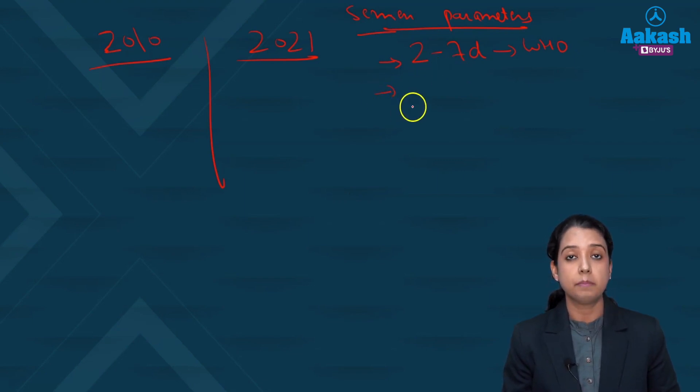Then the temperature of the container in which you are collecting the semen sample should be between 22 degree to 37 degree Celsius. So that should be the temperature which should be maintained.